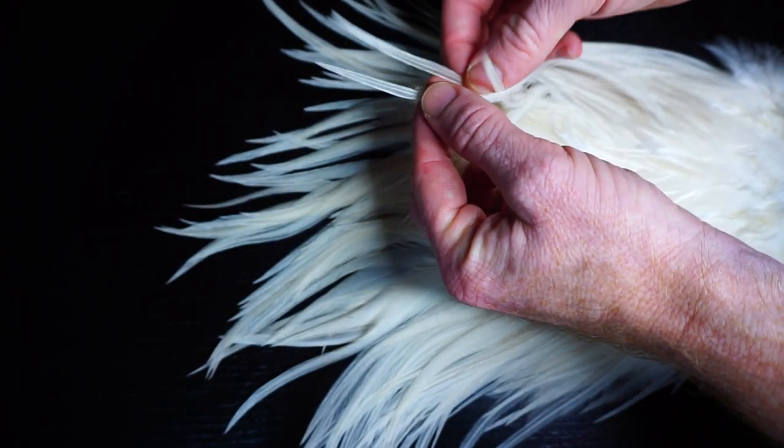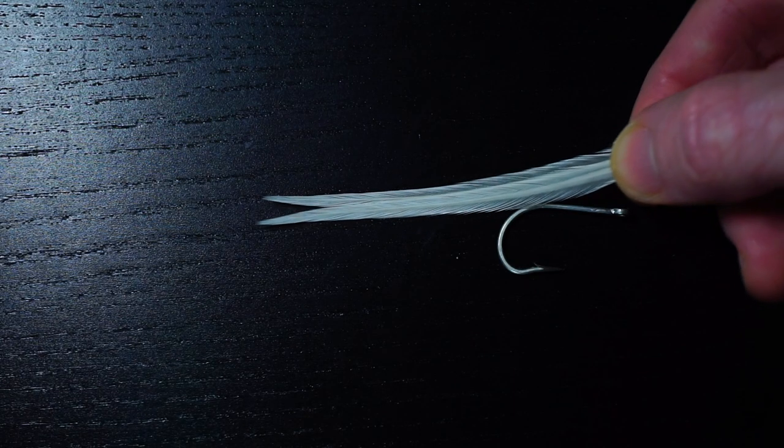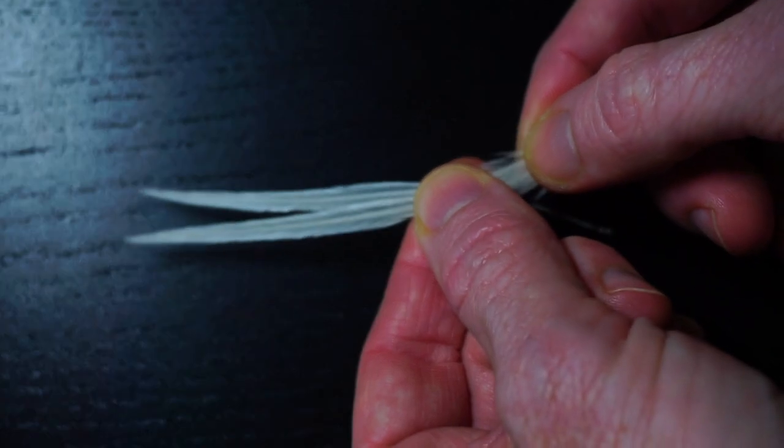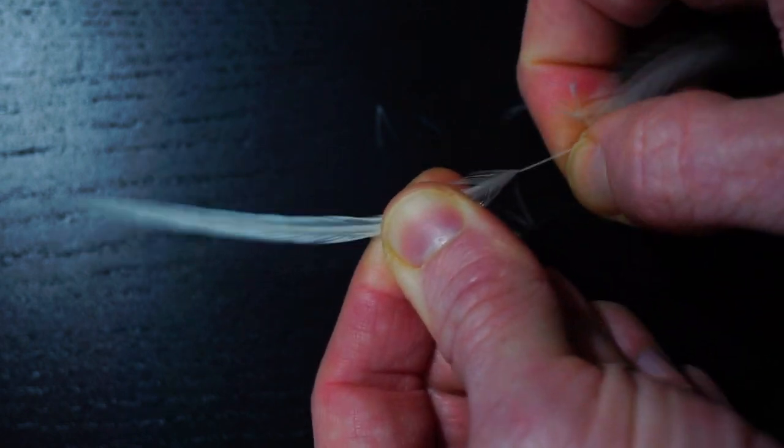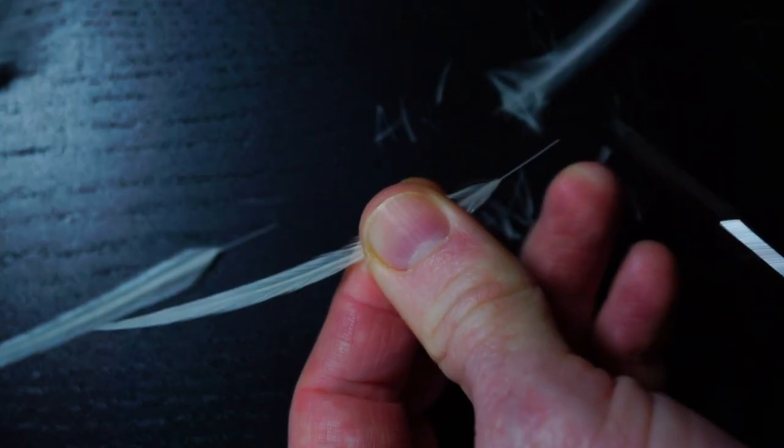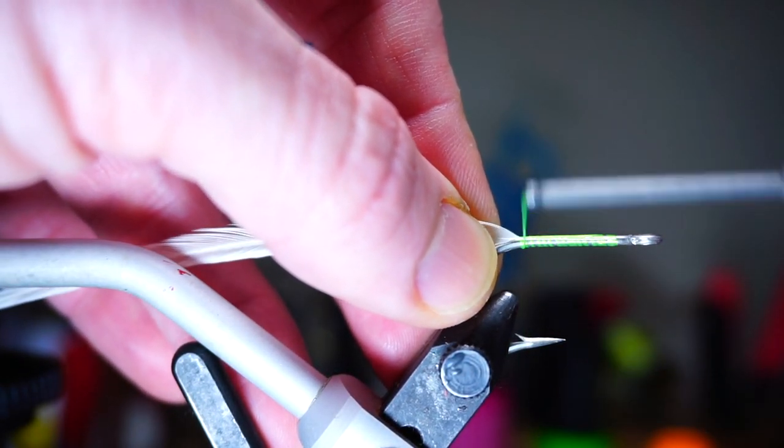Find two saddles with similar looking tips. Measure them out to about three times the length of the hook off the back, then strip off the fibers at that measurement and remove the tips from the rest of the feather.